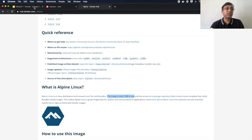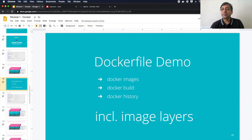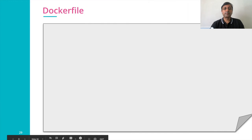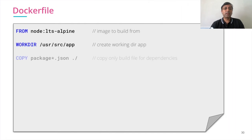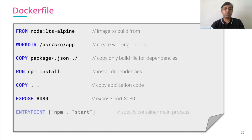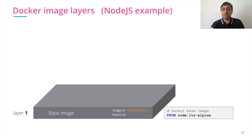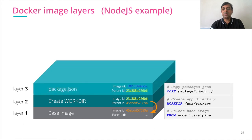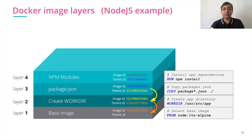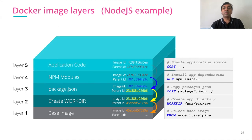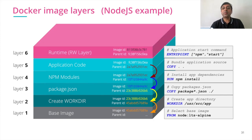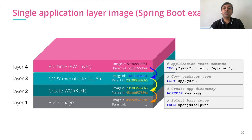To summarize visually what we've achieved: the new Dockerfile separates package.json from the actual source code. The image layers are: base image (node), working directory, copy package.json, npm install, copy application source code, and finally the entry point. This is how you can optimize Docker image layers for better reuse.